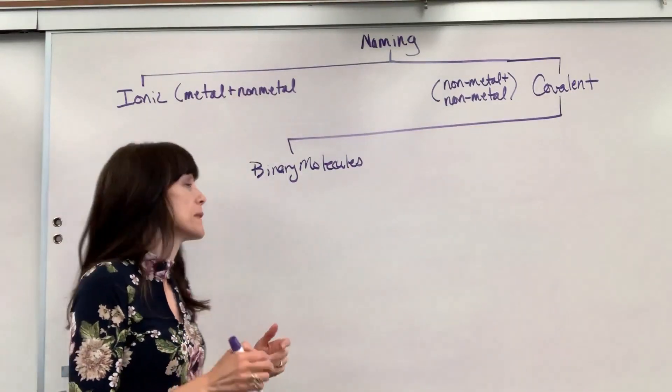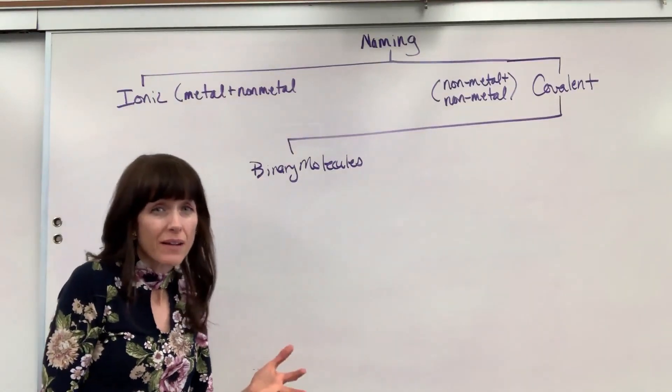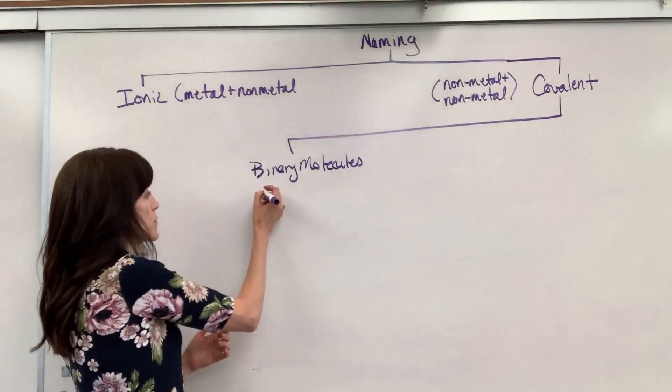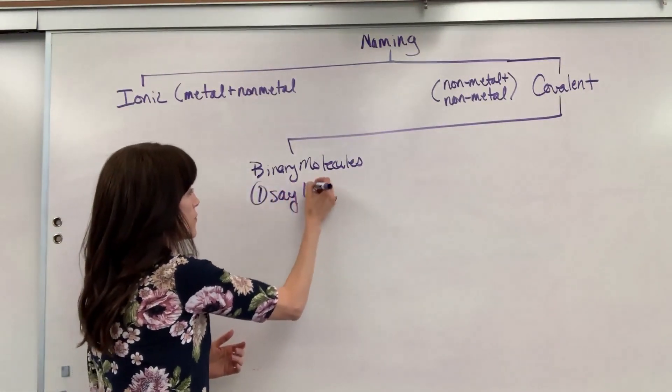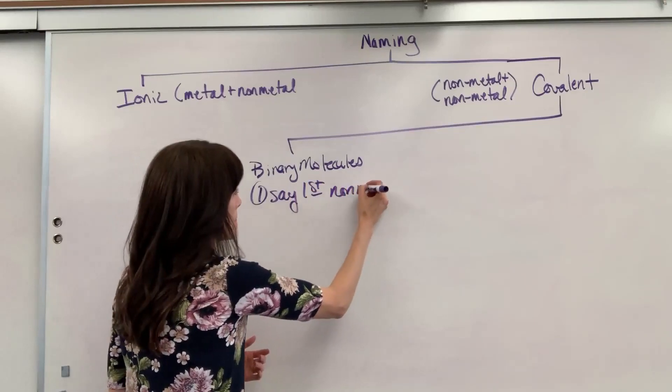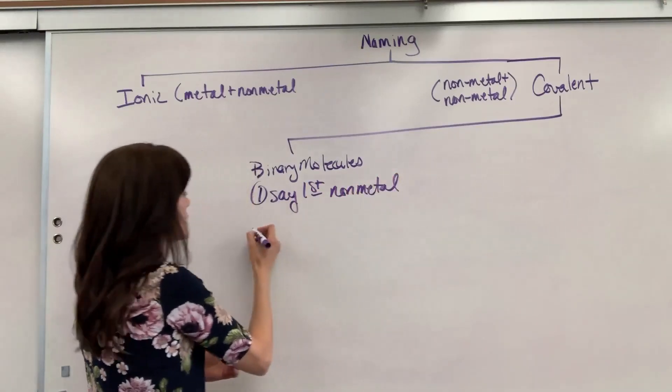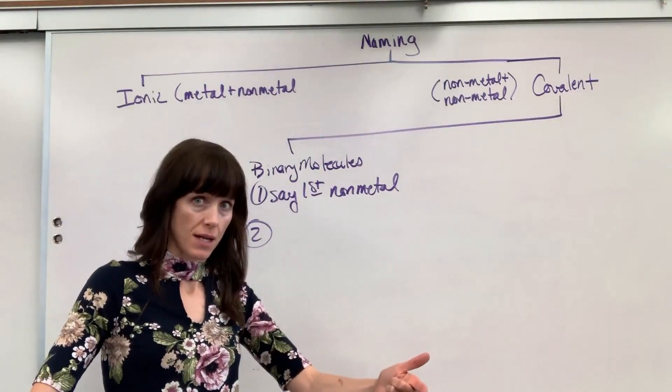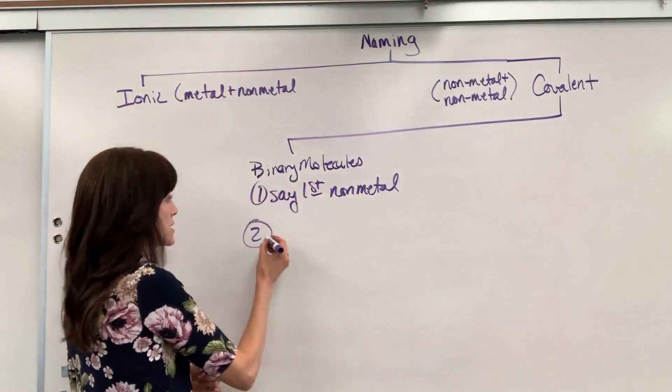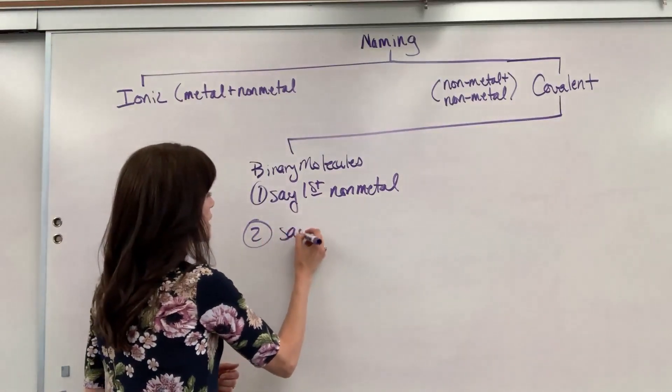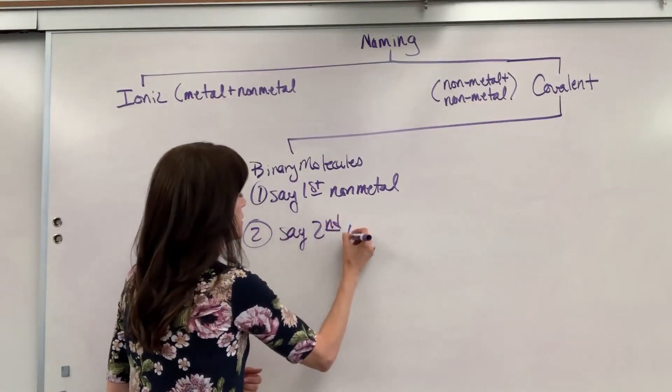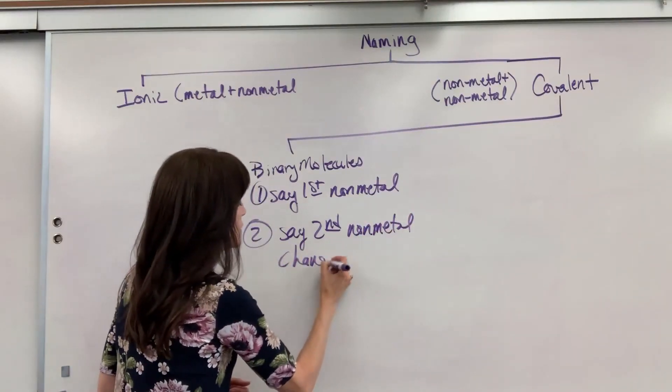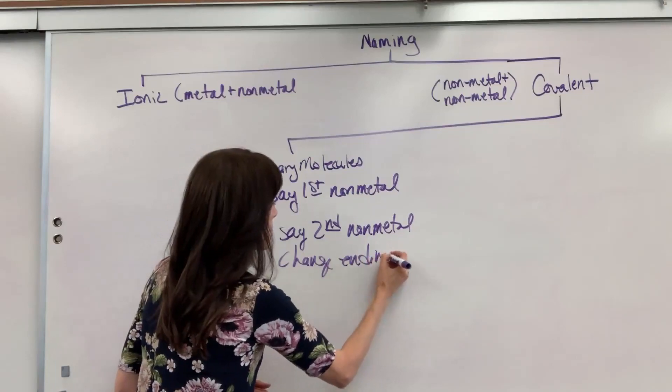We're going to begin similar to ionic that you just say the first element's name. So the first non-metal. Say the first non-metal. And then number two, similar, the second non-metal, you change the ending to ide. So not the first one, but the second one changed the ending to ide. So say second non-metal and we're going to change the ending to the ide.